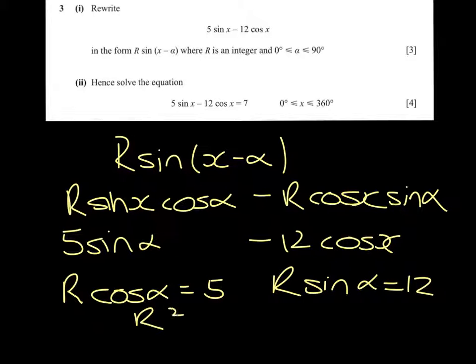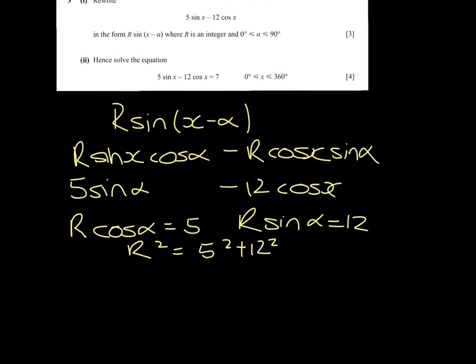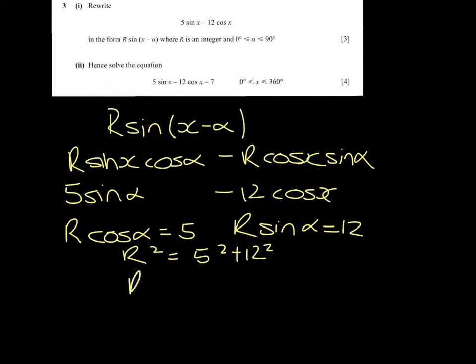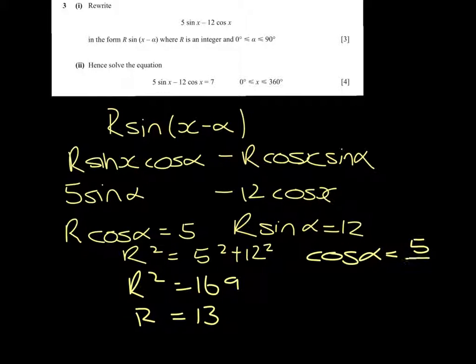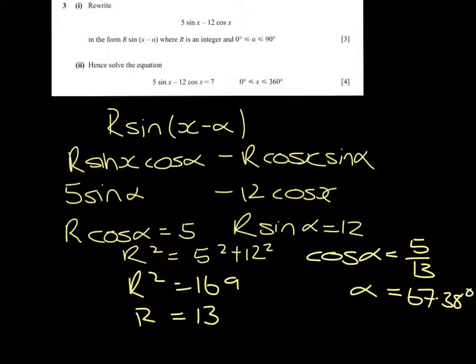If we square all of these and add them, we get R² equals 169, so R is 13. That means cos α is 5/13, and α is 67.38 degrees.